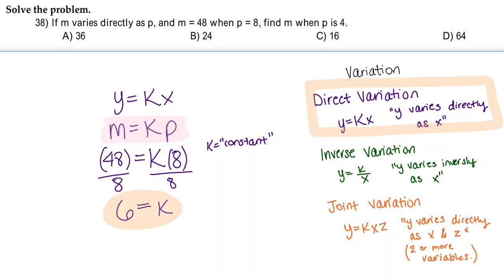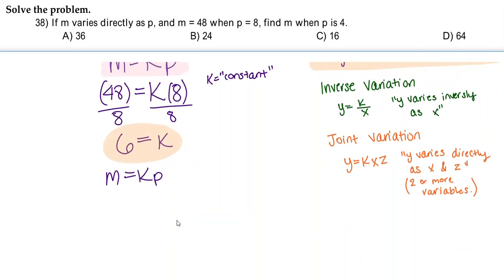Now we have to solve for m when p is 4. So we're going to write down our formula again. Our m equals kp, and we already know what the constant is. It's 6, so we're going to substitute 6 in for k.